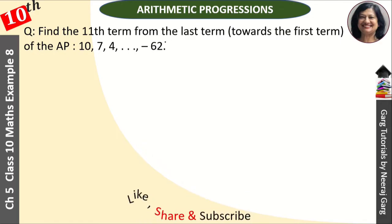Find the 11th term from the last term towards the first term of the AP 10, 7, 4 and so on till minus 62. We have the terms given and we have to tell the 11th term from the last term, not from the beginning, but from the back side.